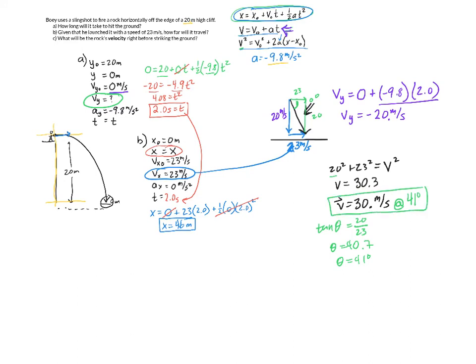And that gives me the final velocity vector as it strikes the ground. Recognize that throughout this whole problem, we dealt with the horizontal and we dealt with the vertical. That allowed us to answer the question. All right. So that's it. And I hope that's enough to get you started on two-dimensional kinematics problems.